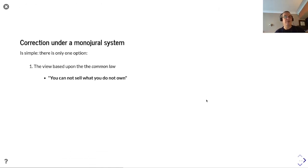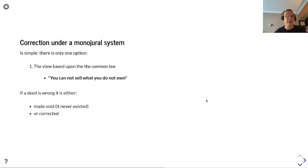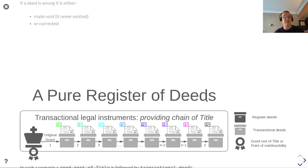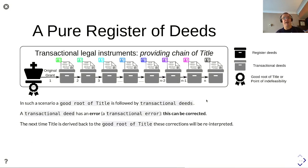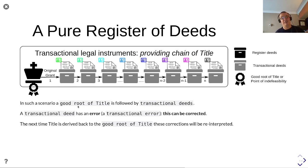Under a monodural system, there is only one option: the view based upon the common law, which tends to be that you cannot sell what you do not own. If a deed is wrong, it is either made void — it never existed — or corrected. Essentially, you have an original grant followed by a number of transactional deeds, and if a transactional deed has an error, this can be corrected. The next time the title is derived back from the good root of title, these corrections will be reinterpreted and reflected in the next state derivation.